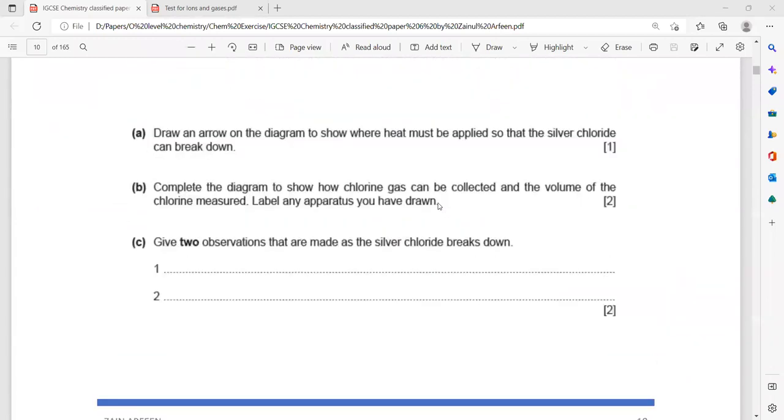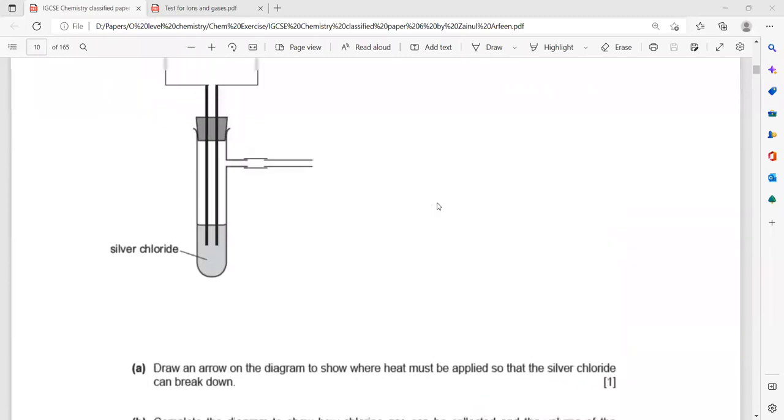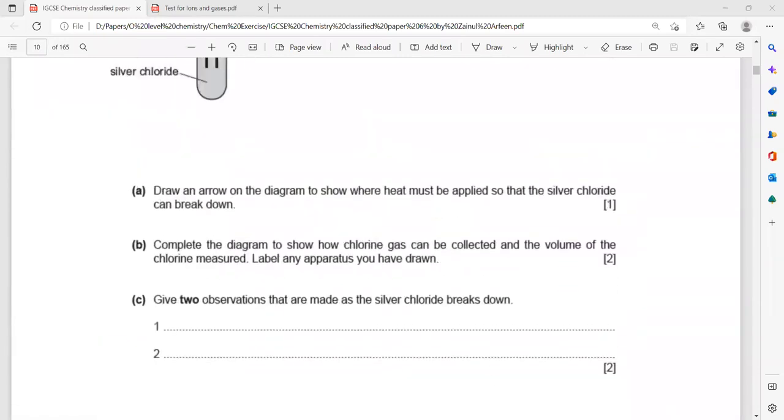The next part, give two observations that are made as the silver chloride breaks down. What will the observation be when the silver chloride breaks down? Shiny solid forms, shiny solid and yellowish green gas. You can mention yellowish green gas, shiny silver gray metal, or you can mention bubbles or effervescence also.